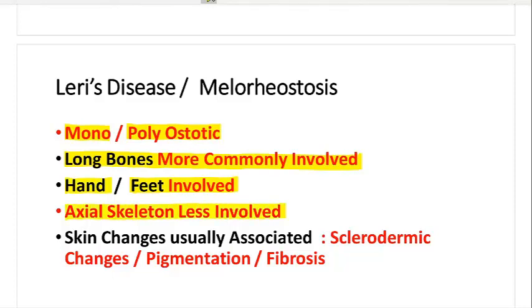There is one more systemic association: cutaneous changes are seen with this condition, in the form of sclerodermic changes — pigmentation or overlying fibrosis — which also points toward the diagnosis of melorheostosis.